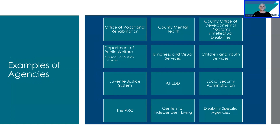Here are some examples of other agencies you may consider including. We've already mentioned the Office of Vocational Rehabilitation. County Mental Health is available throughout the Commonwealth but might be called something different, as may some of the other samples on this slide. It's important to reference these agencies in the IEP meeting to assist youth and families with the secondary transition process and making that connection to those agencies. Your local IU is likely to have a listing of local agencies that may be shared with youth and families.